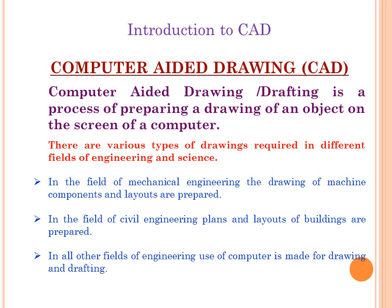Drafting — computer aided drawing — is a process of preparing a diagram of the object on the screen of the computer. CAD software is used for drafting and drawing. There are various types of drawing required in different fields of engineering and science. The CAD software is used in different fields, for example mechanical field, electrical field, civil engineering, and medical field for drawing minute parts.